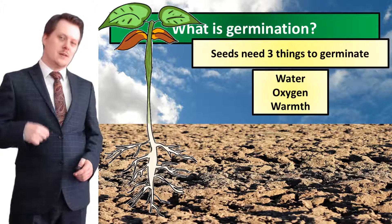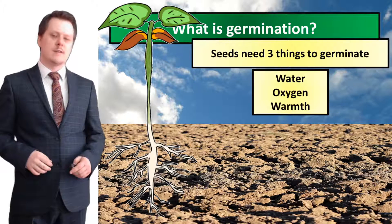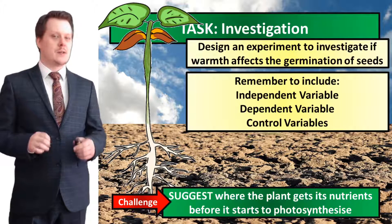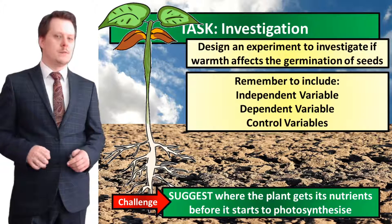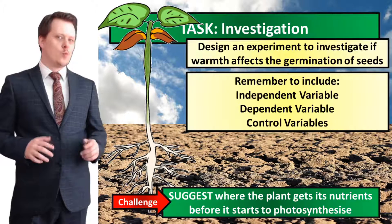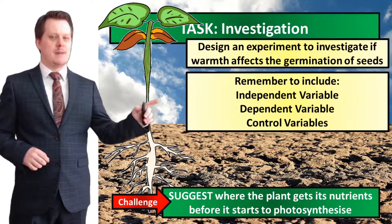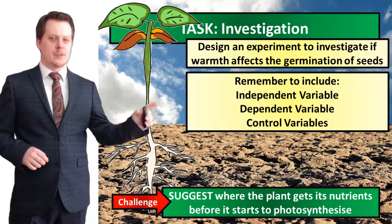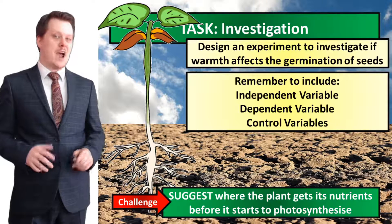A seed needs three things to undergo germination: water, oxygen, and warmth. With that in mind, for your next task design an experiment to investigate how warmth affects the germination of seeds. When writing your investigation, remember to state what the independent variable is, what the dependent variable is, and what your control variables are. For a challenge, suggest where the plant gets its nutrients before it starts to photosynthesize.